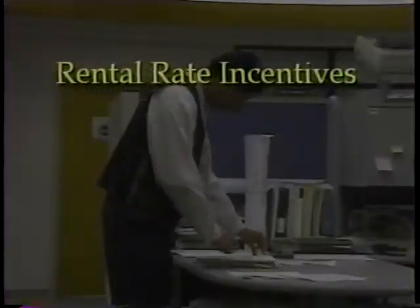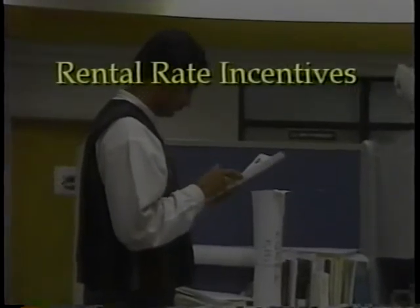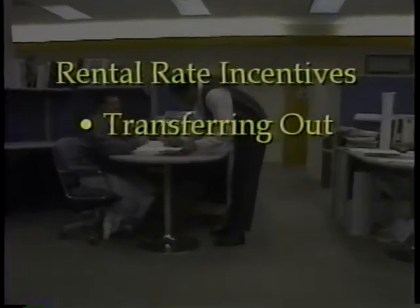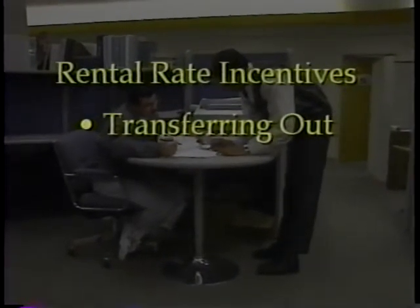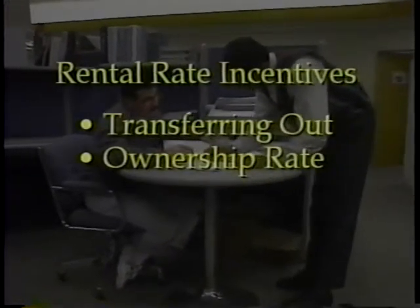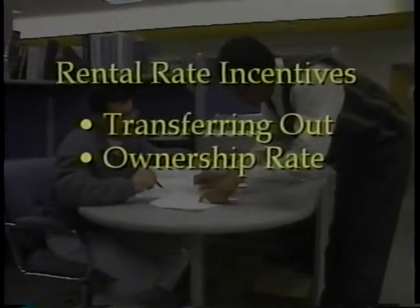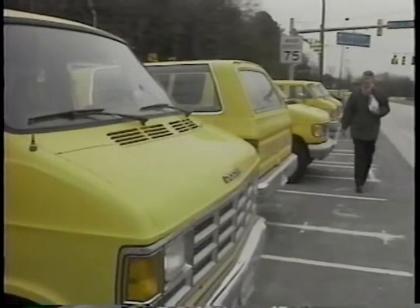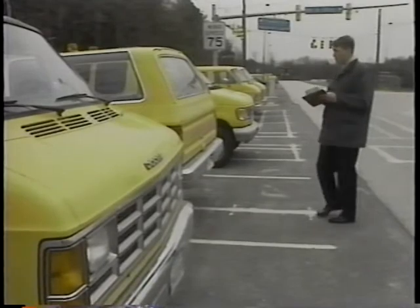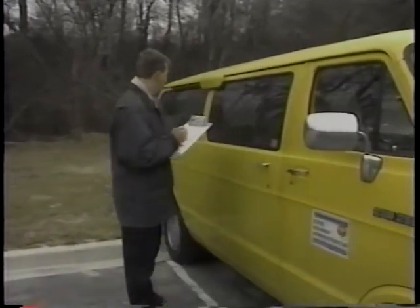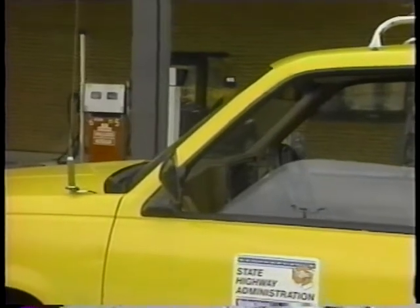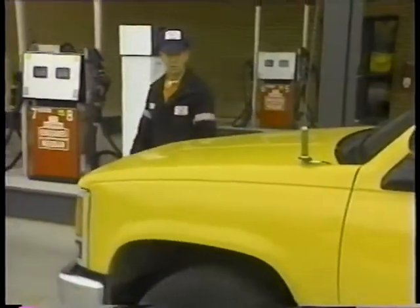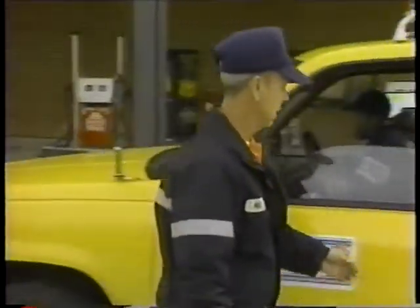The way in which rental rates are structured can provide an inducement to managers to transfer out equipment when it is not being used. With a two-part rate where the user is charged an ownership rate, the user is paying for equipment which isn't needed. Temporarily transferring out the equipment would save on the budget. Leasing can be an economical alternative to owning equipment, though some agencies have procurement procedures which may make leasing difficult — it should be considered as an alternative. Utilization objectives must also be considered; low utilization may indicate that a vehicle should be pooled instead of assigned to a specific department.